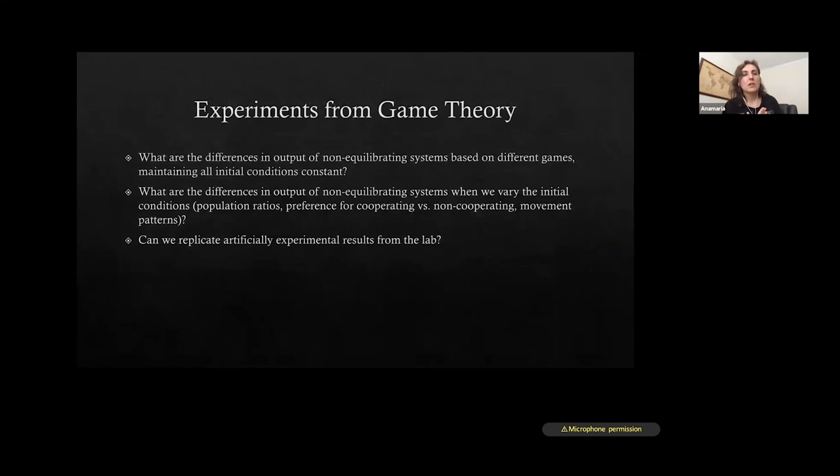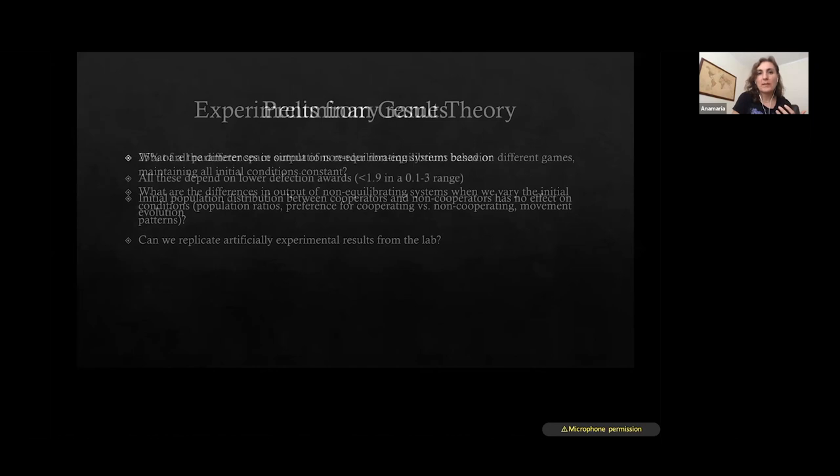And what we have observed, what kind of experiments can we do with game theory, is that what are the differences in the output of non-equilibrating systems based on whether these are different games? So is it Prisoner's Dilemma, hot dog, tit for tat, etc. When we maintain all initial conditions constant, what's the difference? Also, what are the differences in the output of non-equilibrating systems when we vary the initial conditions? So we have different population ratios, we have different preferences for cooperating versus non-cooperating, and we have different movement patterns. And can we replicate artificially these experimental results with data from laboratory experiments?